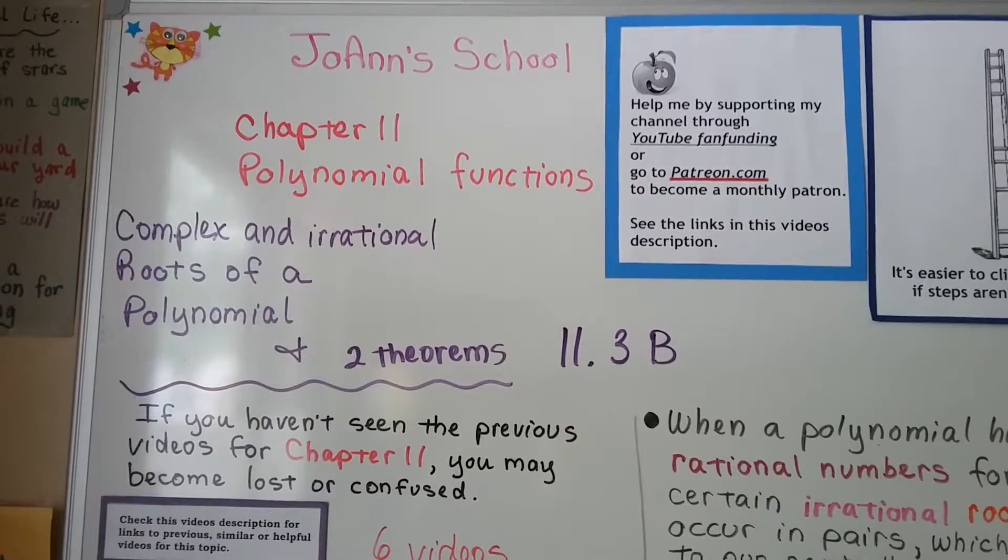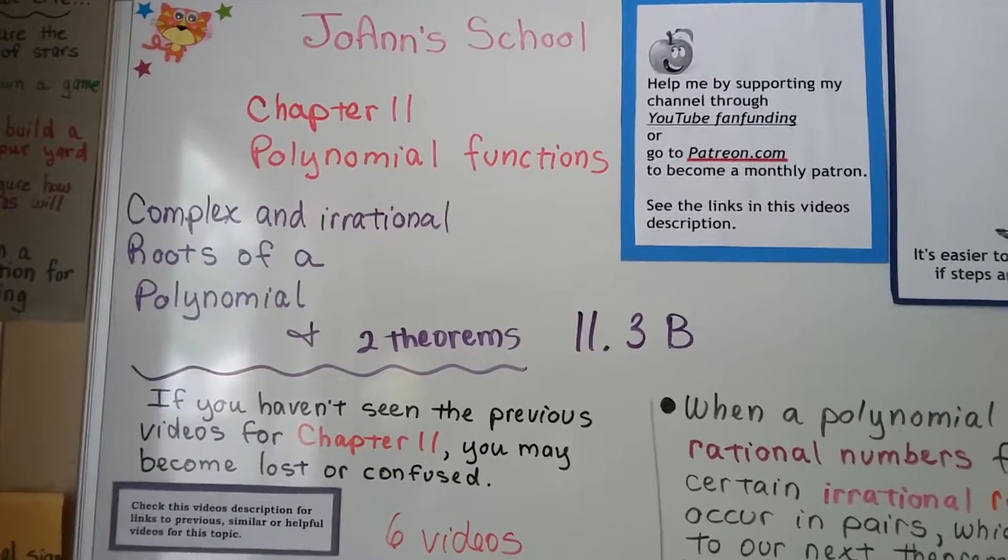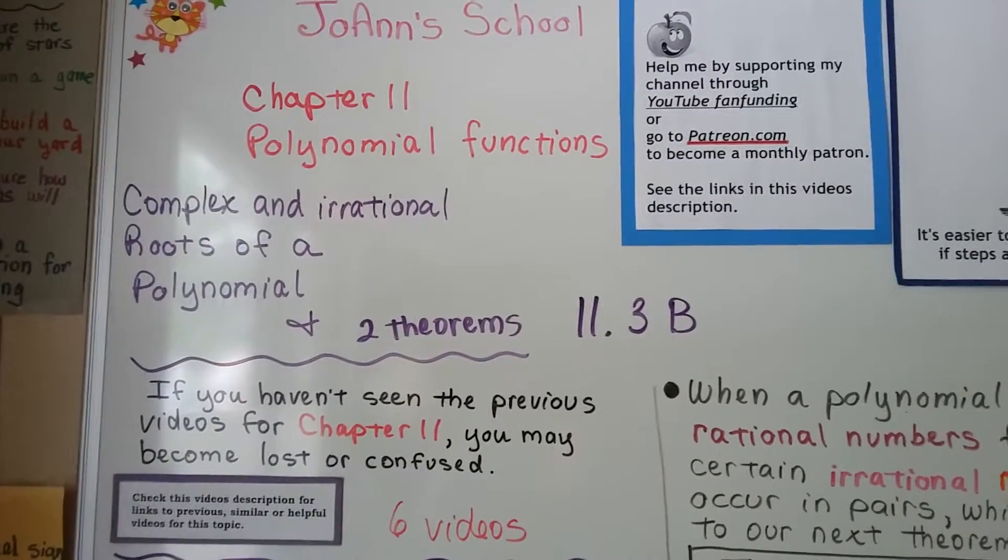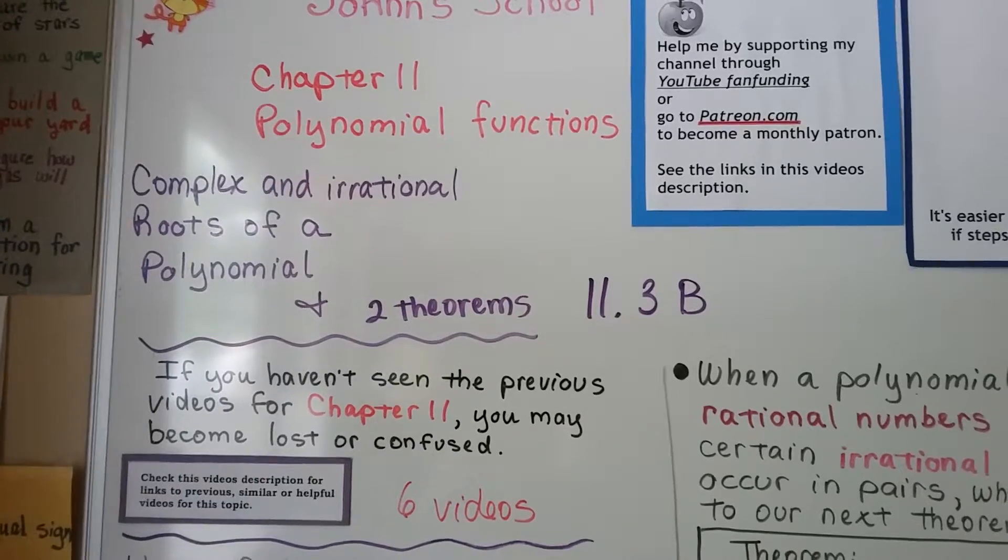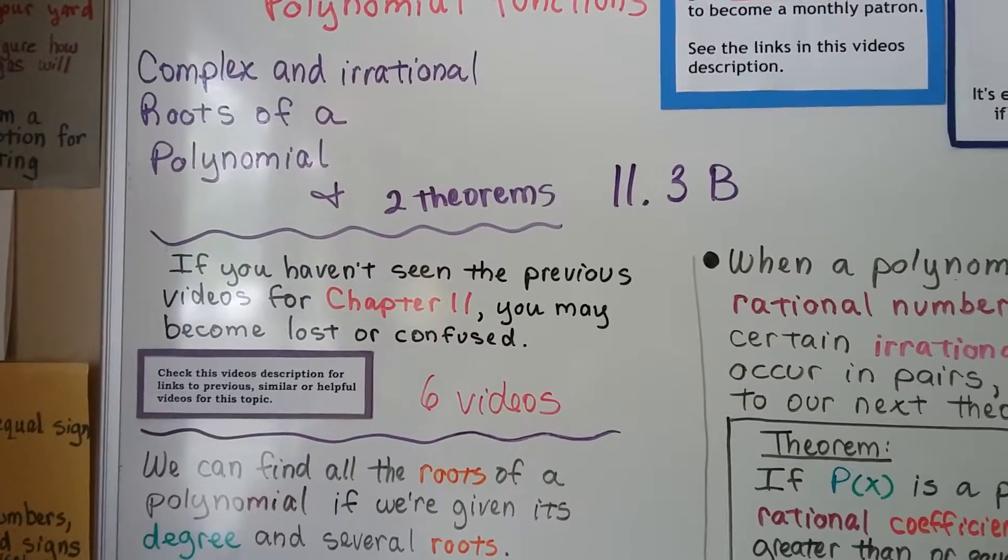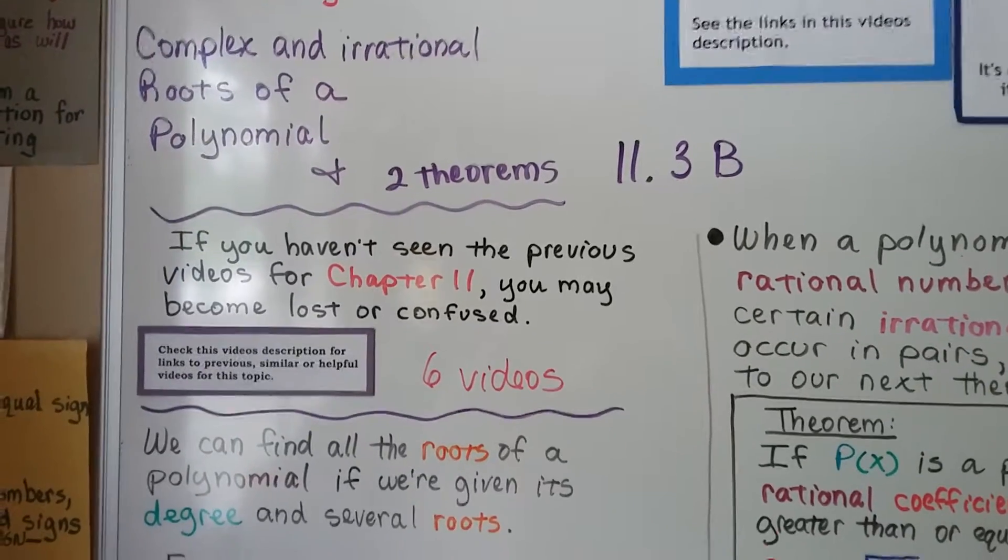This chapter seems to be throwing a lot of theorems at us. We're in chapter 11 for polynomial functions at 11.3b. This is complex and irrational roots of the polynomial, and two more theorems. There's links to the six previous videos for chapter 11 in this description.